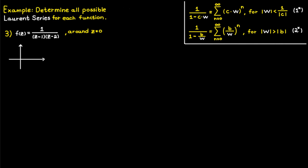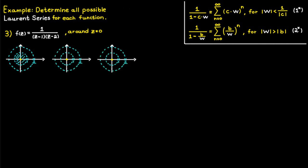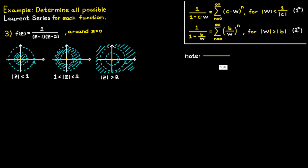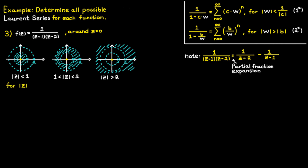For our last example, we mark the important points: the point of expansion c equal to zero, and the poles at c equal to one and c equal to two. This gives three different regions — one inside the smaller circle, one between the two circles, and one outside the big circle. In all cases where you don't see how to use geometric series right away, I recommend starting by rewriting the expression using partial fraction expansion, so you can determine the Laurent series by examining each term one at a time.